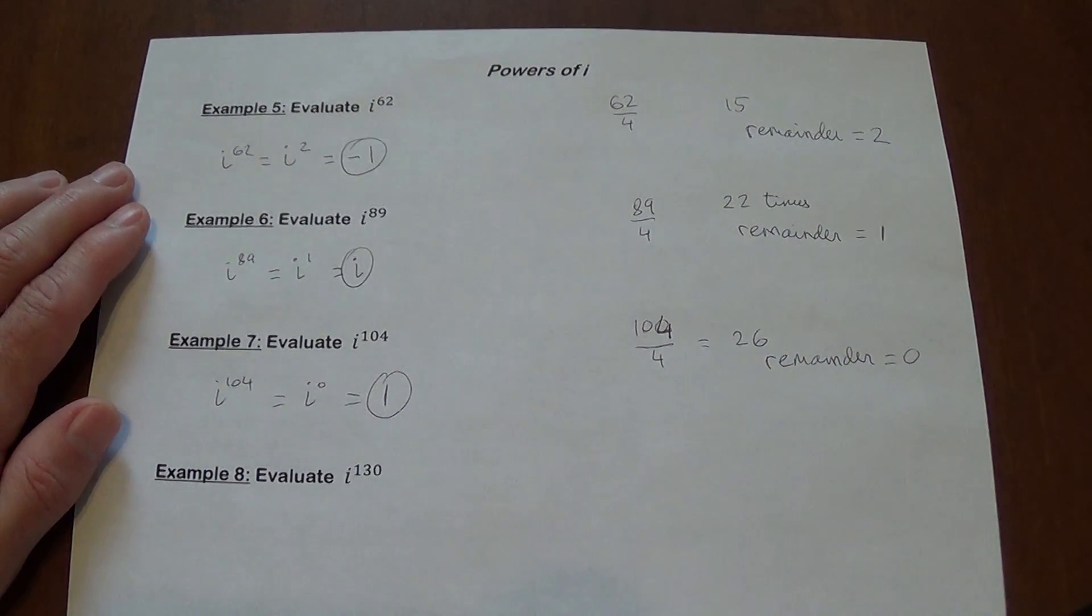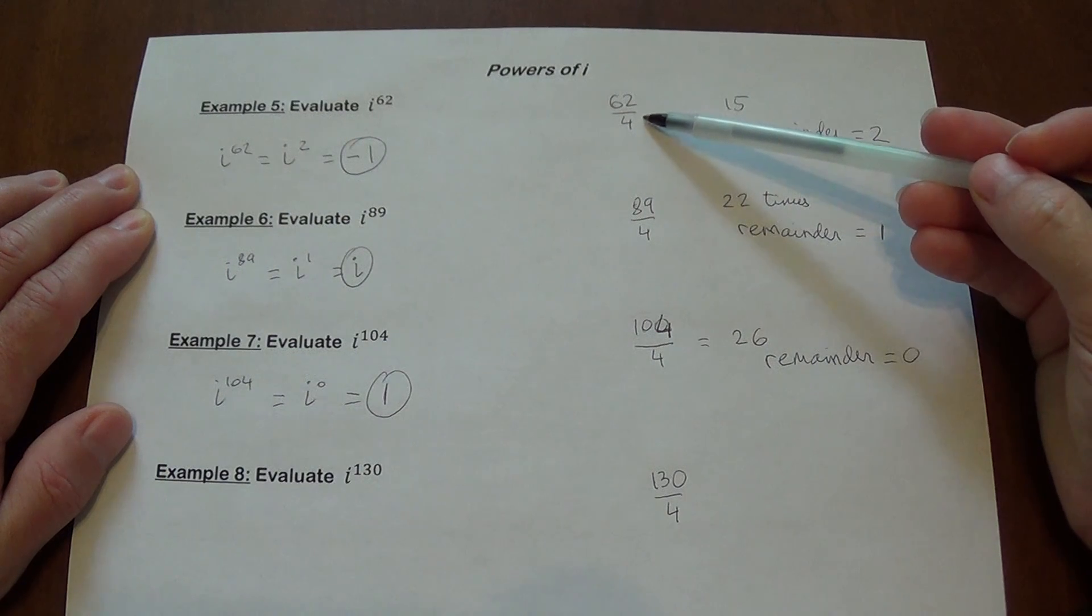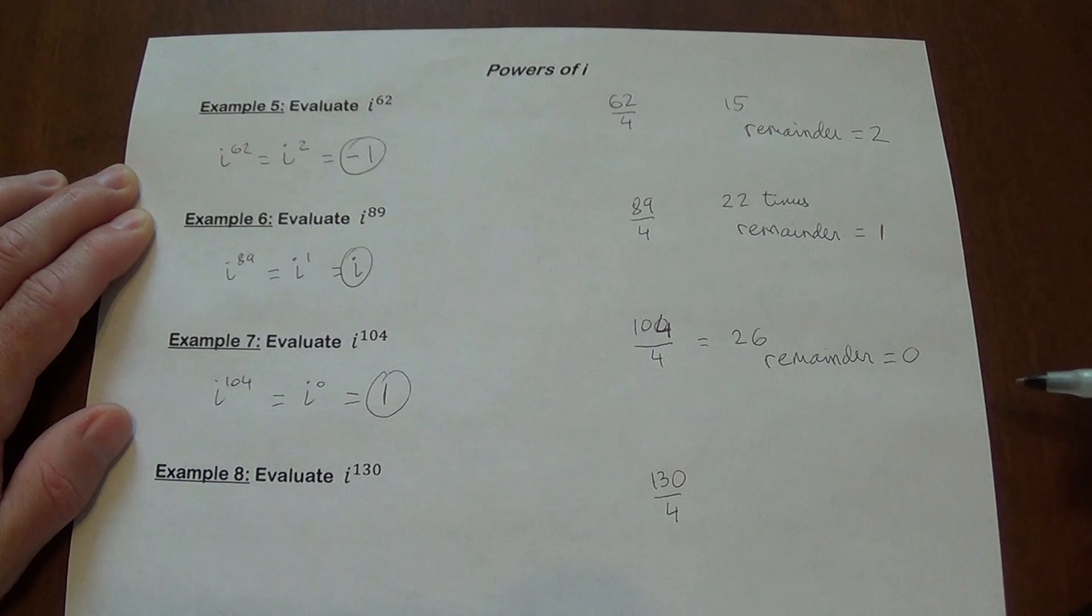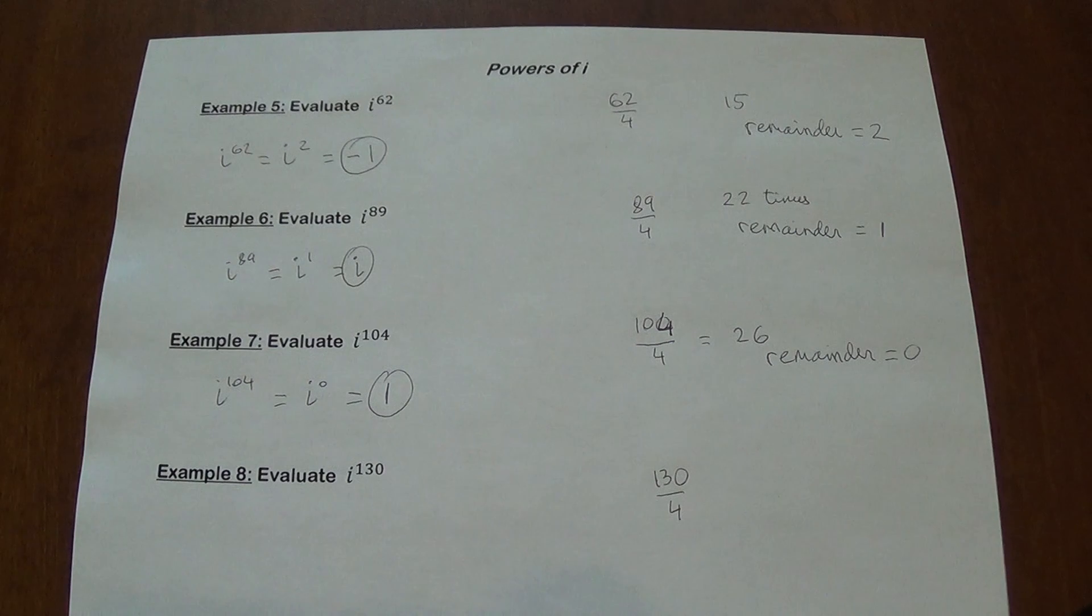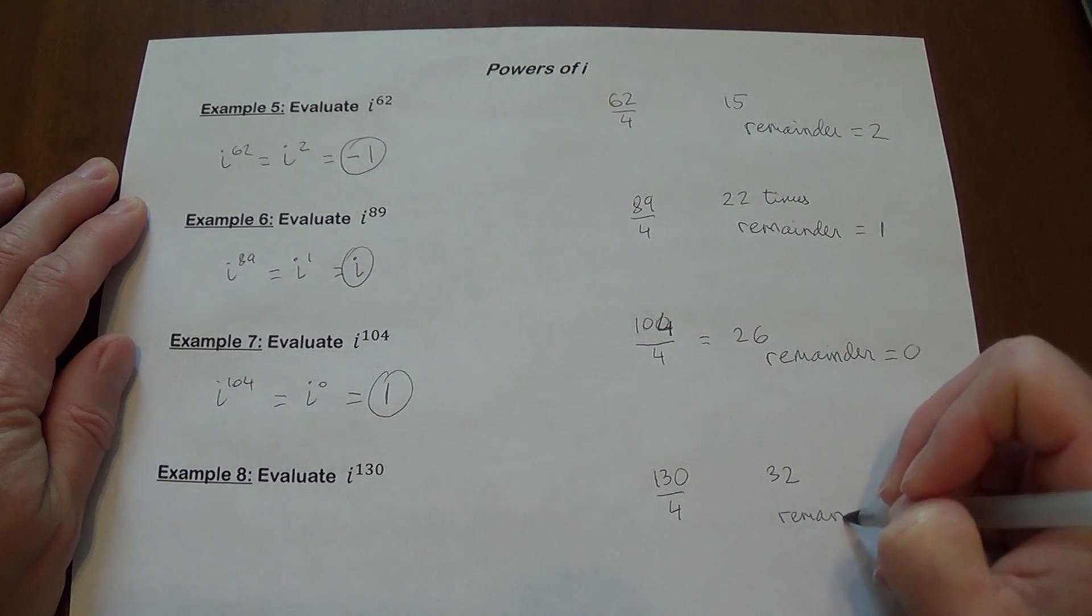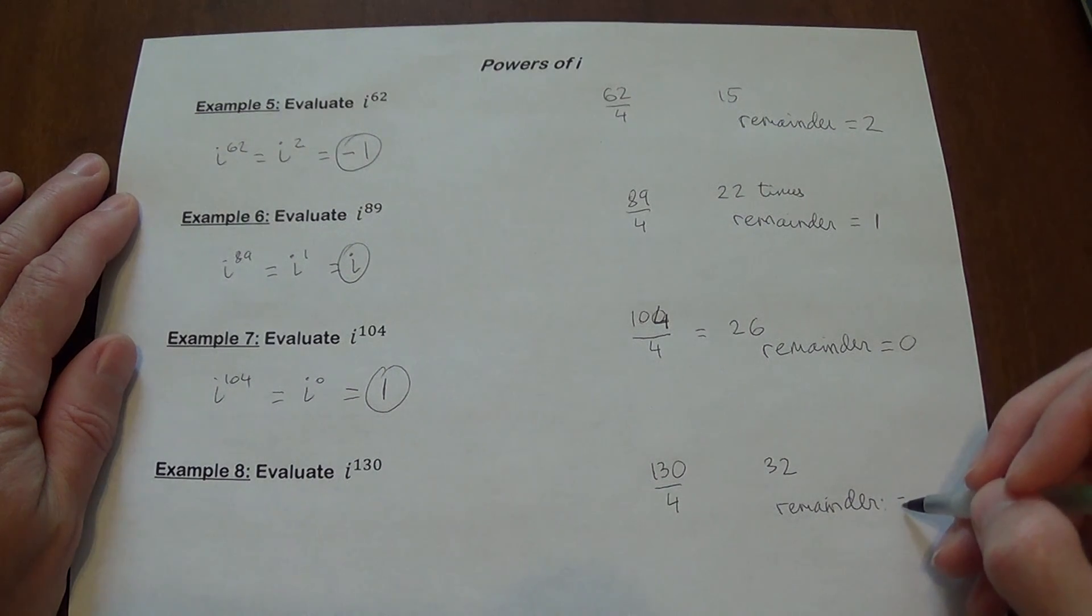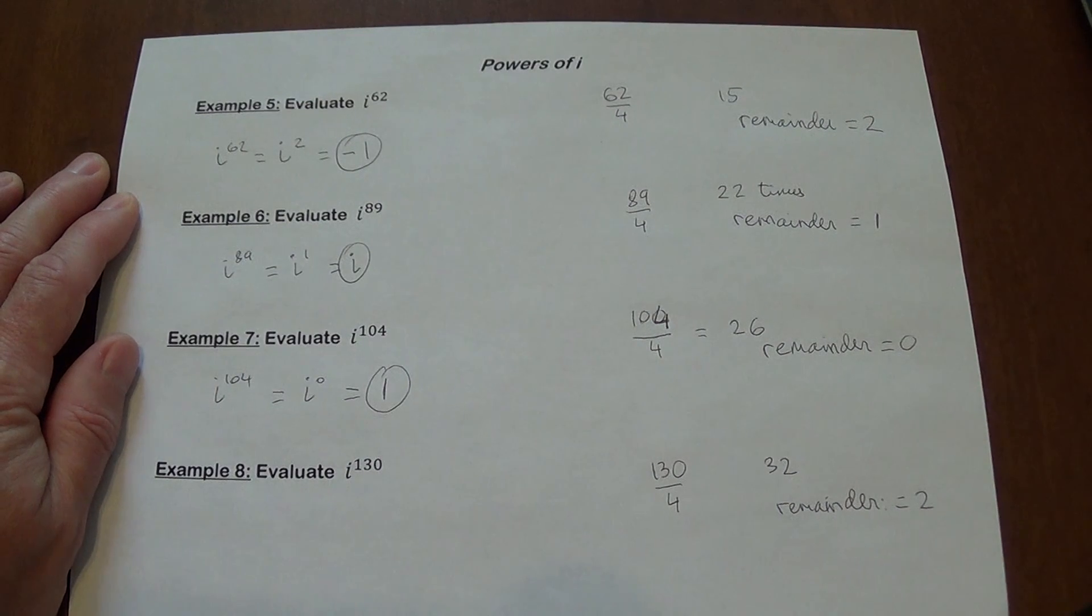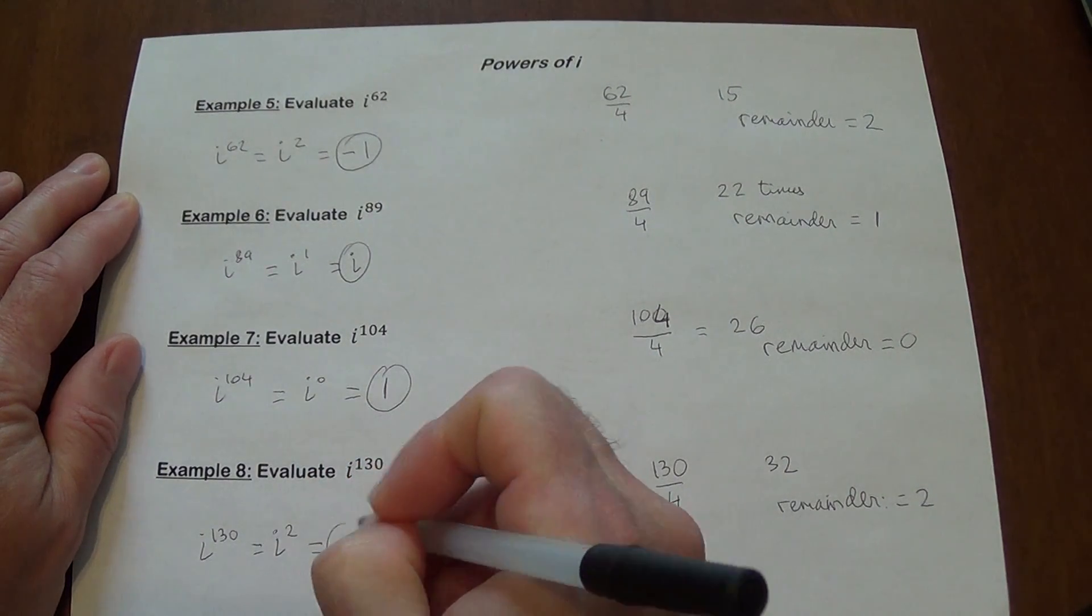i to the power of 130. We do 130 divided by 4. I do want to point out one thing. I'm writing that as division here. I am not simplifying these fractions. You do need to keep them divided by 4. How many times 4 goes into 130? It's a little bit of a higher number but it's possible. If you divide 130 by 4, it's going to give you a whole number of 32. The remainder is going to be what? If you do 32 times 4, that is going to give you 128. With 128, you still have 2 remaining. So the remainder is going to be 2. i to the power of 130 is the same exact thing as i squared. And that's negative 1.